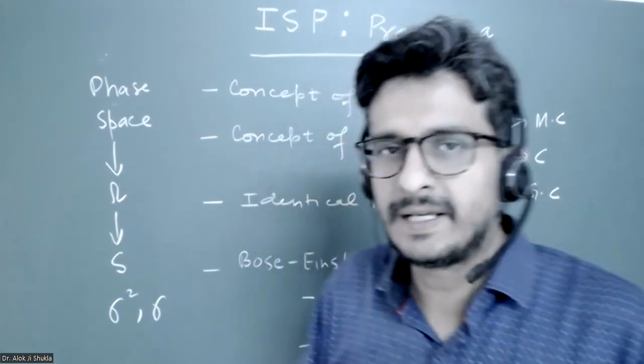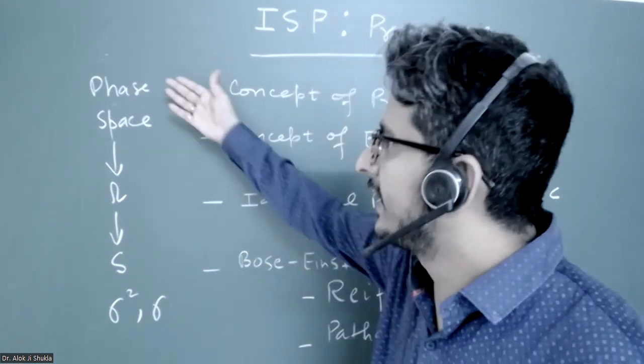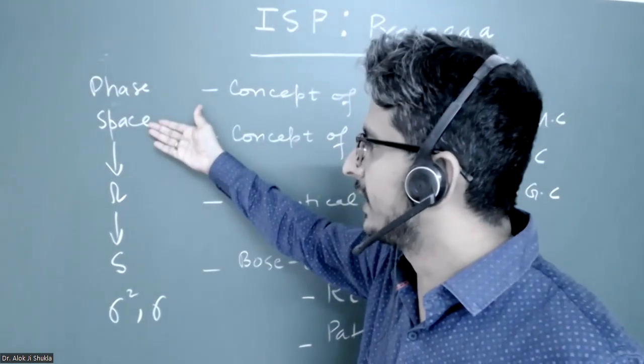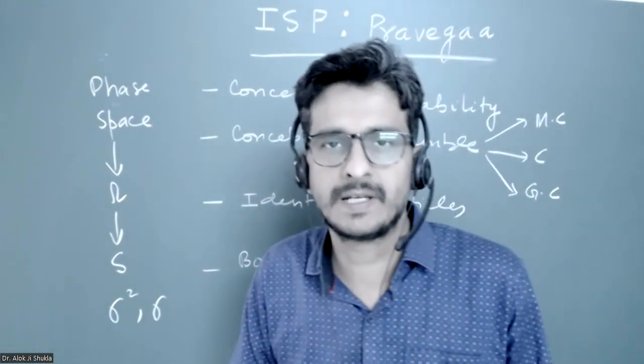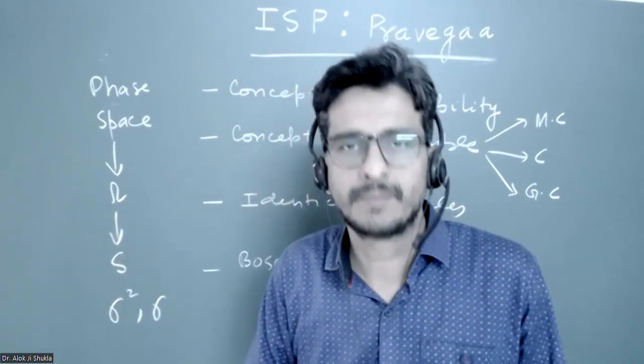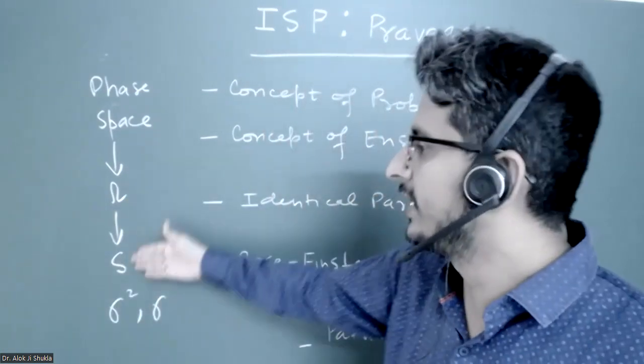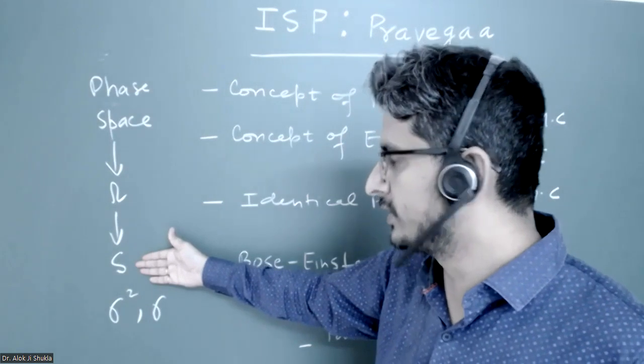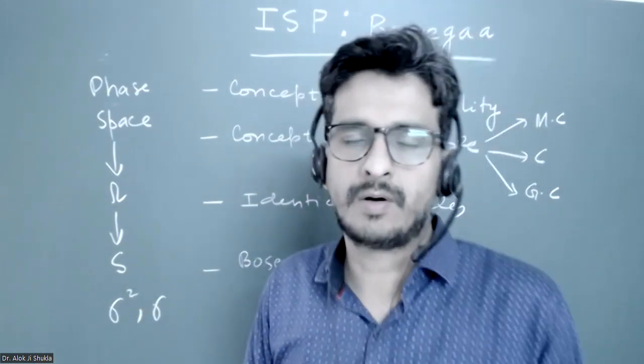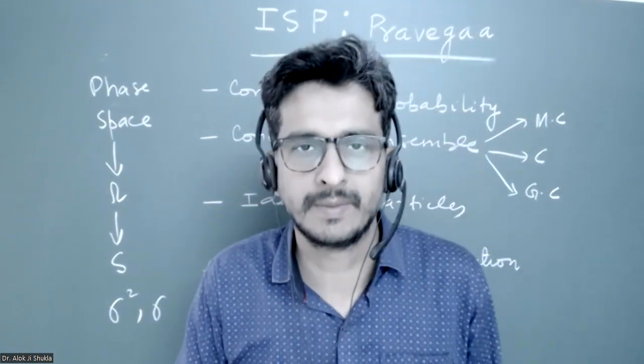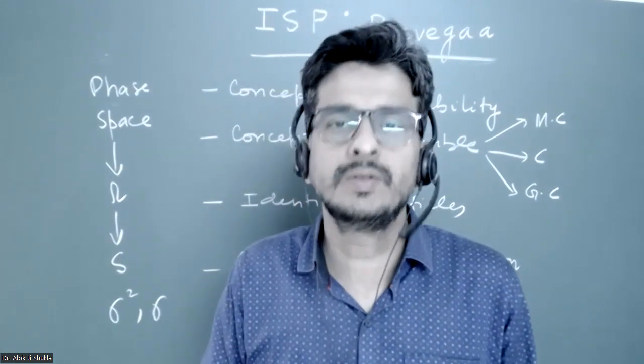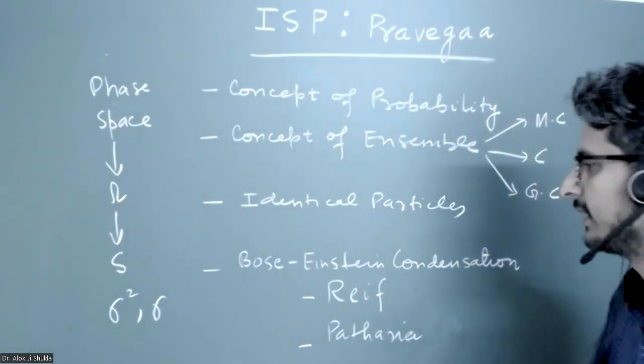And that is a very important understanding of phase space from classical mechanics and how we use it in statistical mechanics to get the number of microstates and then how Boltzmann related it to entropy and how entropy is related to thermodynamics. So read it from good books like Reef and Patharia.